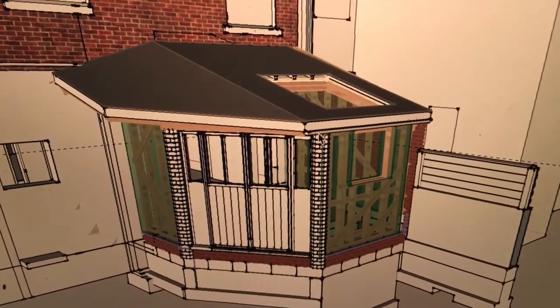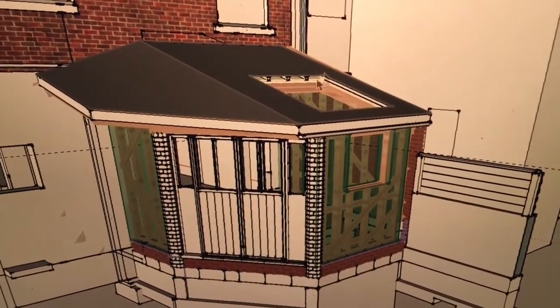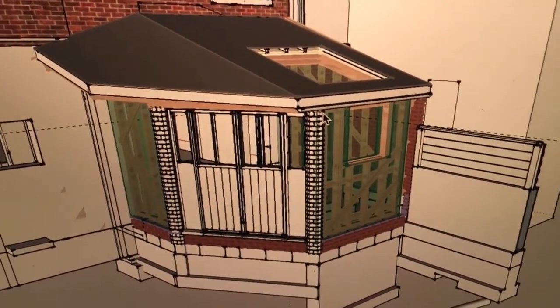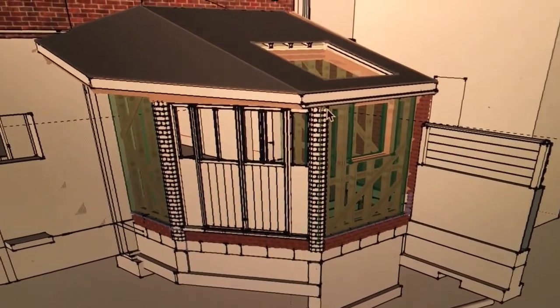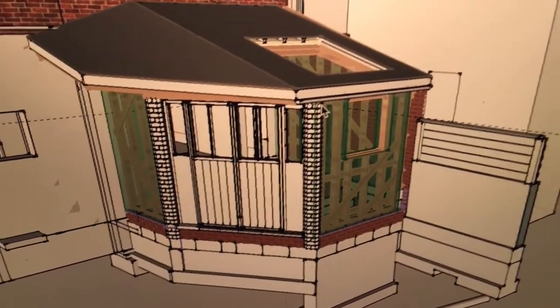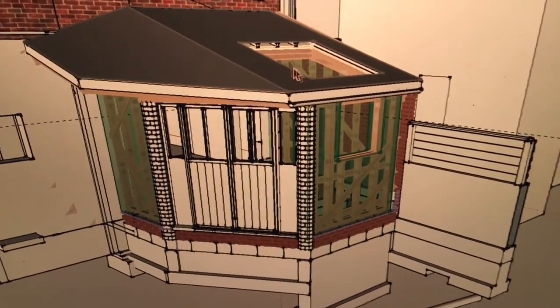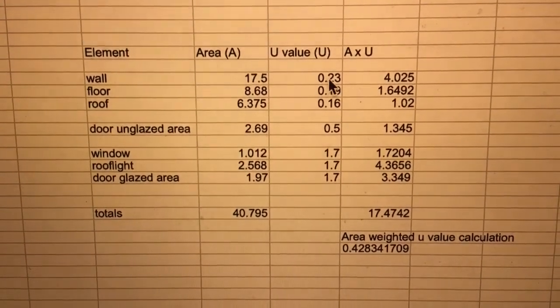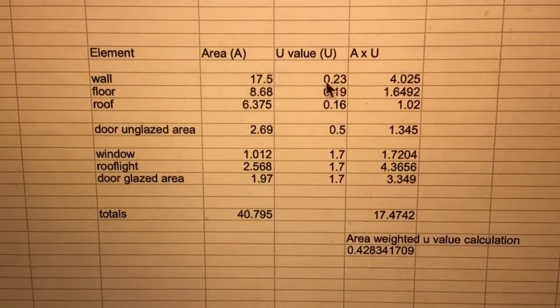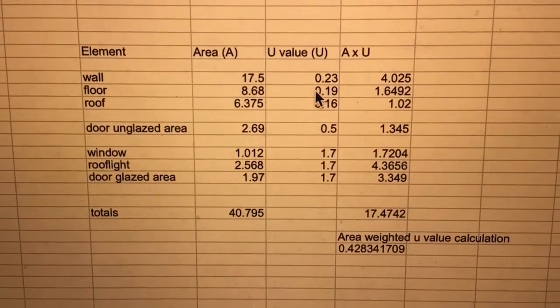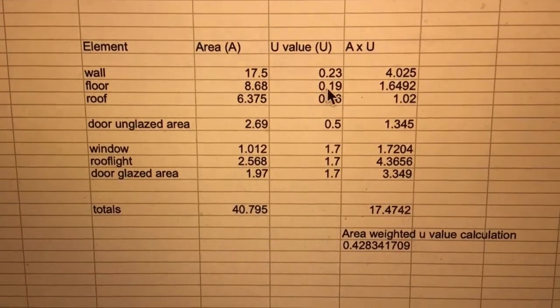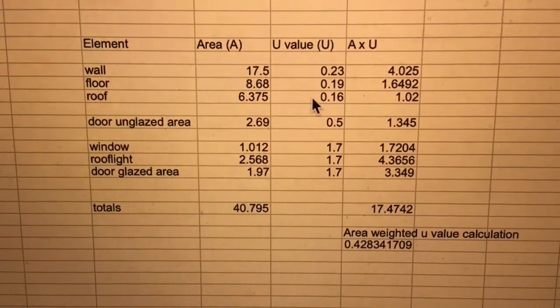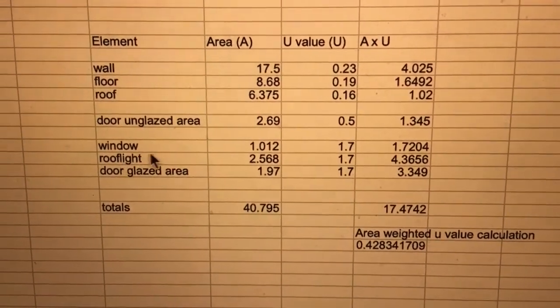Next, I do the same calculation again, but this time I leave the skylight in and I use the real u-values that I can achieve in the walls and the floor and the ceiling. And remember that these exceed the values given as targets by building control. And I want to demonstrate that that can compensate for adding this extra bit of glazing in. The numbers look like this. The target u-value for the walls was 0.28, but I can achieve 0.23 with the hempcrete. For the floor, it was 0.22, but my insulation can give 0.19. For the roof, it was 0.18 and I'm achieving 0.16. And this time I've included the skylight.